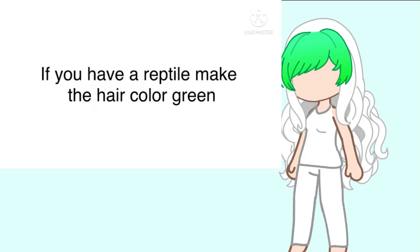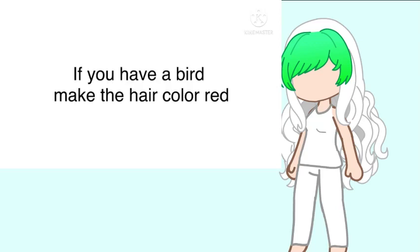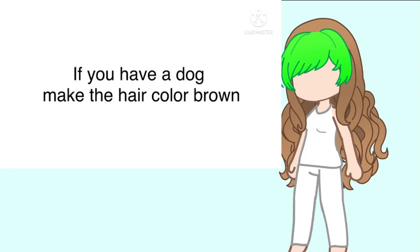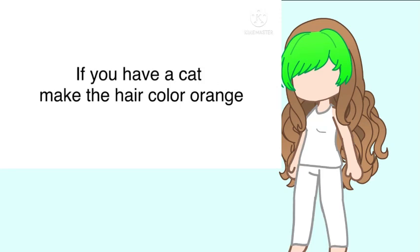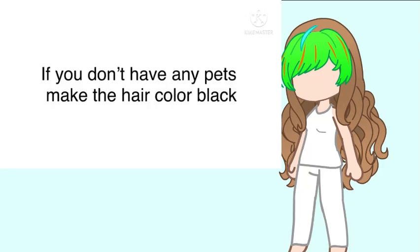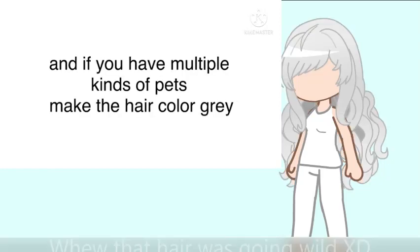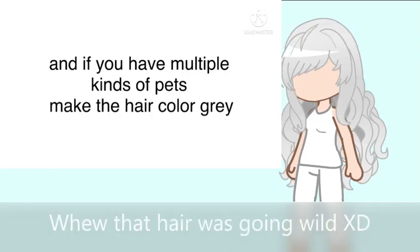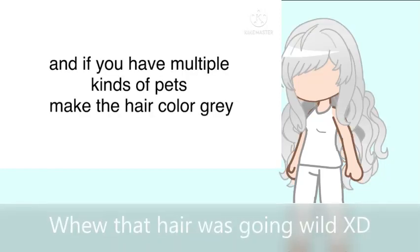For the hair color, base it off your pet. If you have a reptile, make the hair color green. If you have a bird, make the hair color red. If you have a dog, make the hair color brown. If you have a cat, make the hair color orange. If you have any other pets, make the hair color teal. If you don't have any pets, make the hair color black. And if you have multiple kinds of pets, make the hair color gray.